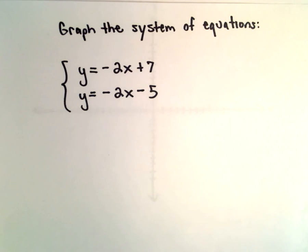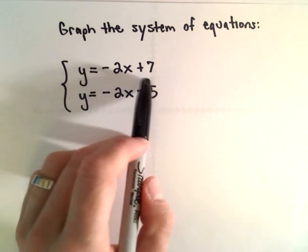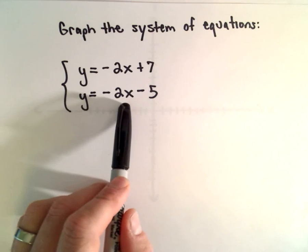Here we're going to graph the system of equations y equals negative 2x plus 7 and y equals negative 2x minus 5.